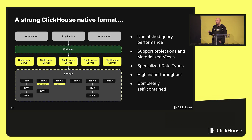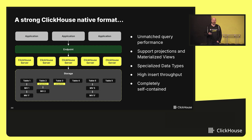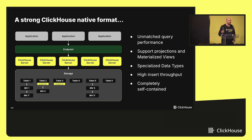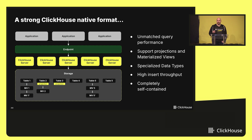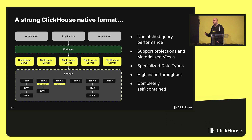If we go back to the history of ClickHouse, it was initially developed with query latency in mind. The goal was to make ClickHouse extremely fast on top of very large amounts of data — not data that can fit in memory, but designed to be as fast as possible on terabytes and petabytes of data. A lot of emphasis was put on making sure we have a strong native format designed for performance, and we developed features to support low query latency.